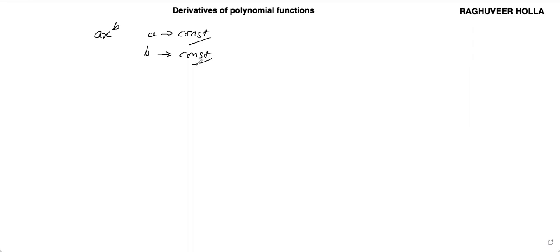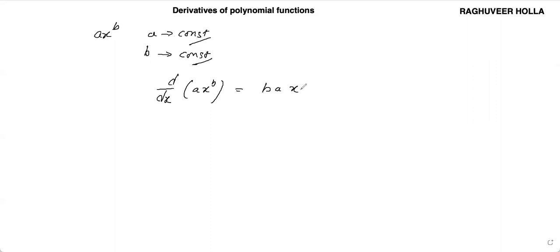Let us take the derivative of this with respect to x. So d by dx of a·x to the power of b will be b·a·x to the power of b minus 1.